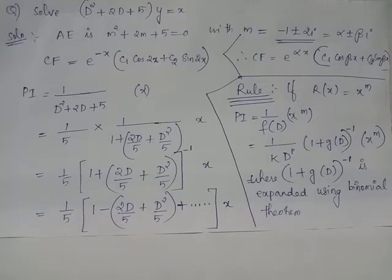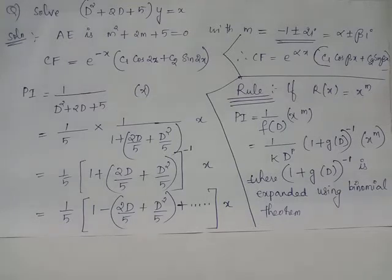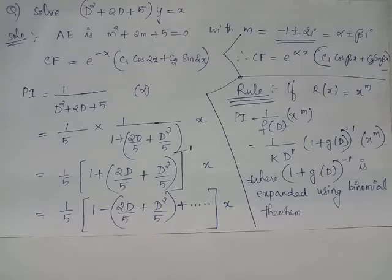Solve the differential equation: D squared plus 2D plus 5 acting on y equals x. Here we have auxiliary equation m squared plus 2m plus 5 equals 0. The roots of the auxiliary equation are of the format alpha plus minus beta i, where alpha equals minus 1 and beta equals 2.